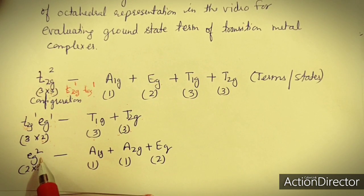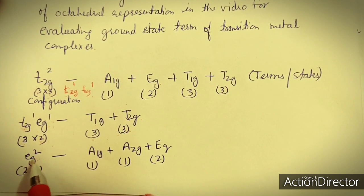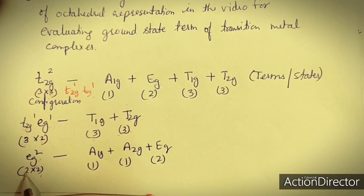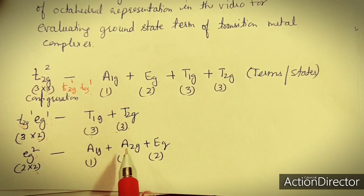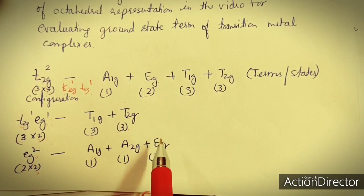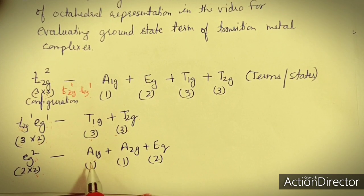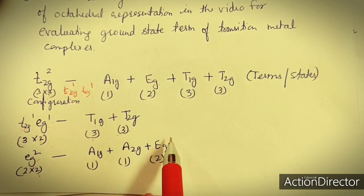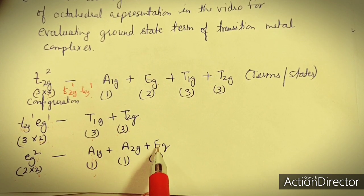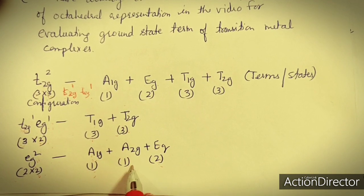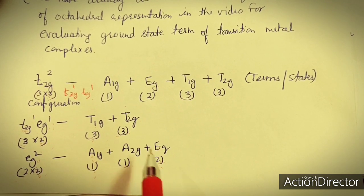For EG² configuration (the second excited state): one EG has degeneracy two and the other two, giving total degeneracy four. Their product is A1G + A2G + EG. Degeneracy of A1G is one, A2G is one, and EG is two — totaling four. So the degeneracy of generating terms matches the EG² configuration. A means singly degenerate, E means doubly degenerate, T means triply degenerate.